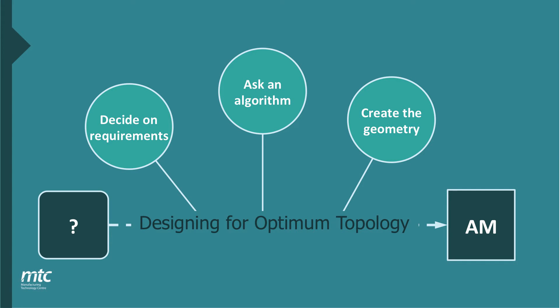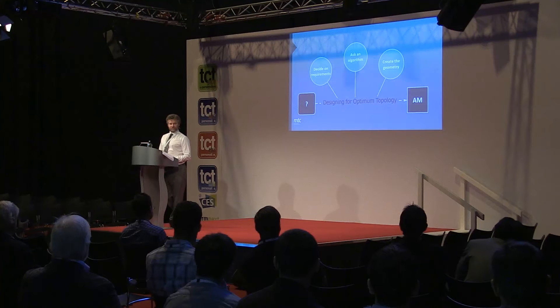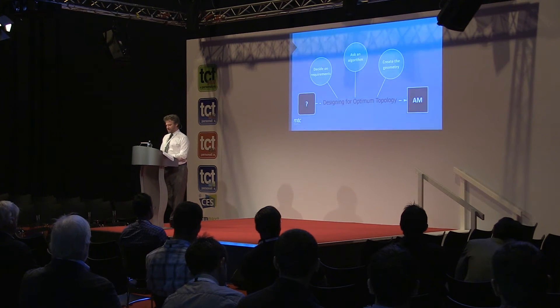In this sort of workflow, if you have an idea and want a complex optimised form from the machine, there are essentially three steps. You define what the component needs to do in an engineering sense, then ask an algorithm to propose a solution, which you sanity check. When happy with it, you create a geometry based on the algorithm's suggestion and send it to the AM machine.